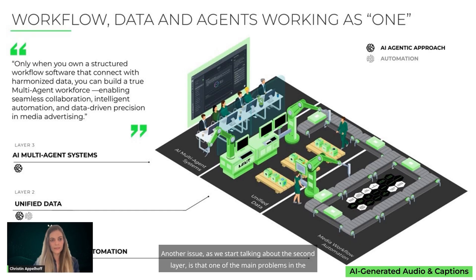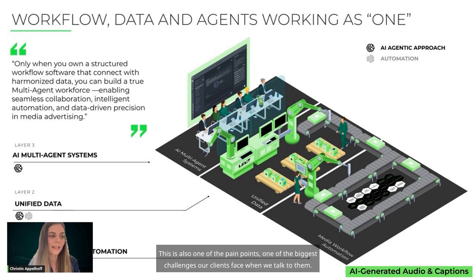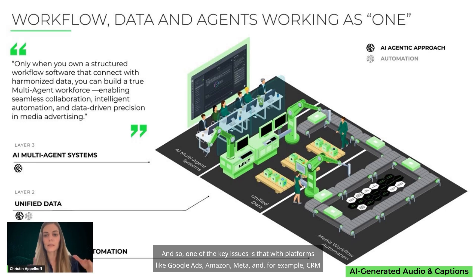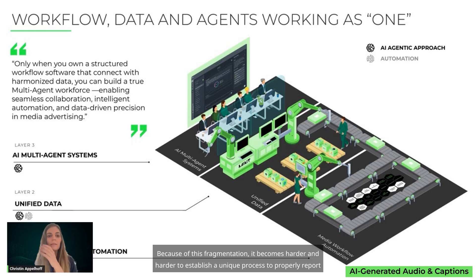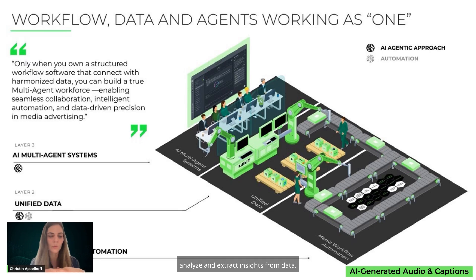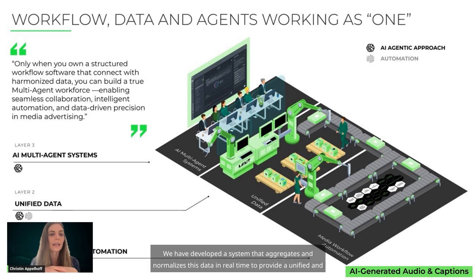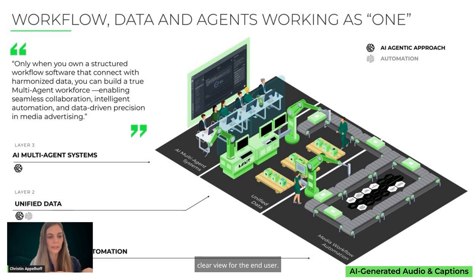One of the main problems in the advertising world is the fragmentation of data across different platforms — this is one of the biggest pain points our clients face. With platforms like Google Ads, Amazon, Meta, and CRM systems, it is often difficult to analyze data effectively. Because of this fragmentation, it becomes harder to establish a unified process to properly report, analyze, and extract insights. At Mint, we have developed a system that aggregates and normalizes this data in real time to provide a unified and clear view for the end user.